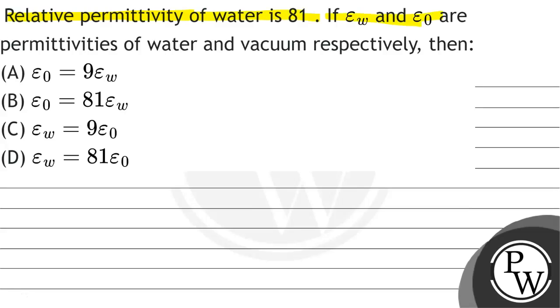If epsilon water and epsilon naught are permittivities of water and vacuum respectively, then the options are: A) epsilon naught equals 9 epsilon w, B) epsilon naught equals 81 epsilon w, C) epsilon w equals 9 epsilon naught, and D) epsilon w equals 81 epsilon naught.